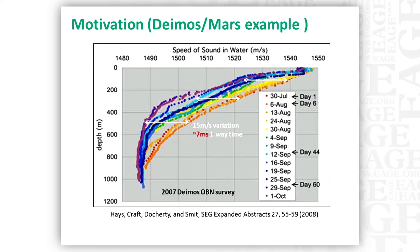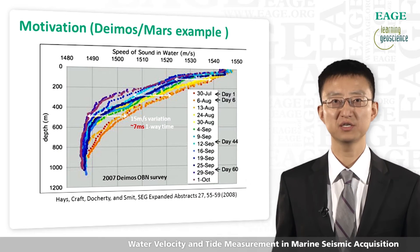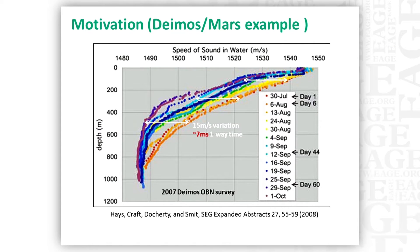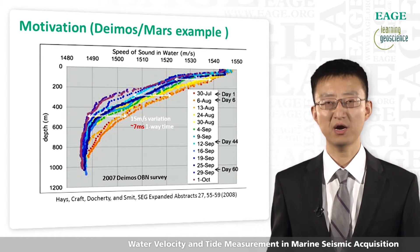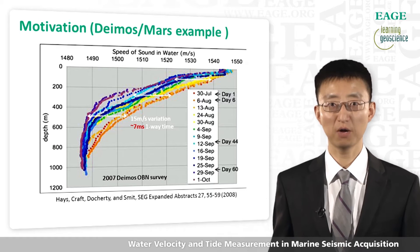Here is an example of the water velocity variations during 4D seismic surveys. This plot shows the ROV measured water velocities as a function of depth during Shell's DEMOS 2007 OBN survey. Different colors show different times during the survey, and we can see the water velocity variation is up to 15 meters per second, or 7 ms one-way time — that's huge for 4D. After a lot of work on water statics with travel time analysis, we managed to remove a large part of the errors caused by this and obtained good quality 4D data. But it's very hard to further improve the 4D statics with seismic data alone, so we feel it's necessary to directly measure and continuously monitor water properties during seismic acquisition.